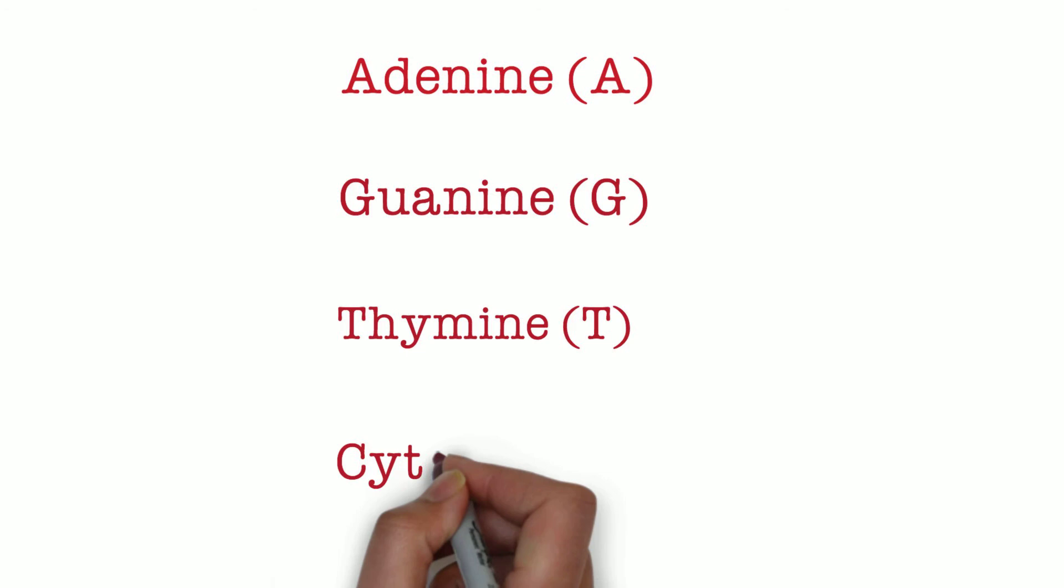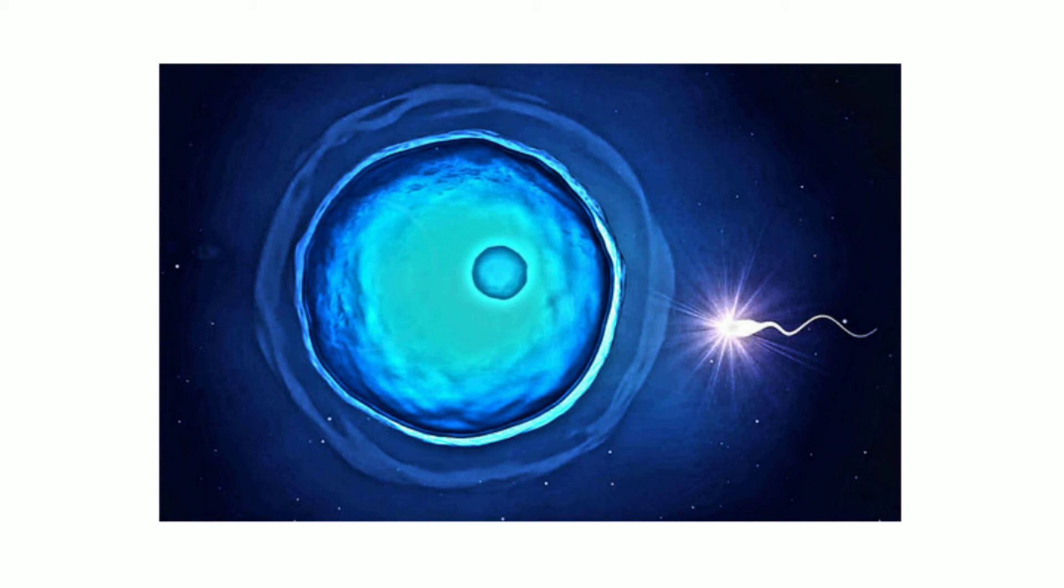Following the meeting of sperm and egg that gave rise to each of us, the code was transcribed and translated over the following nine months, as our being was transformed from a single microscopic cell into a fully formed, unique human body.